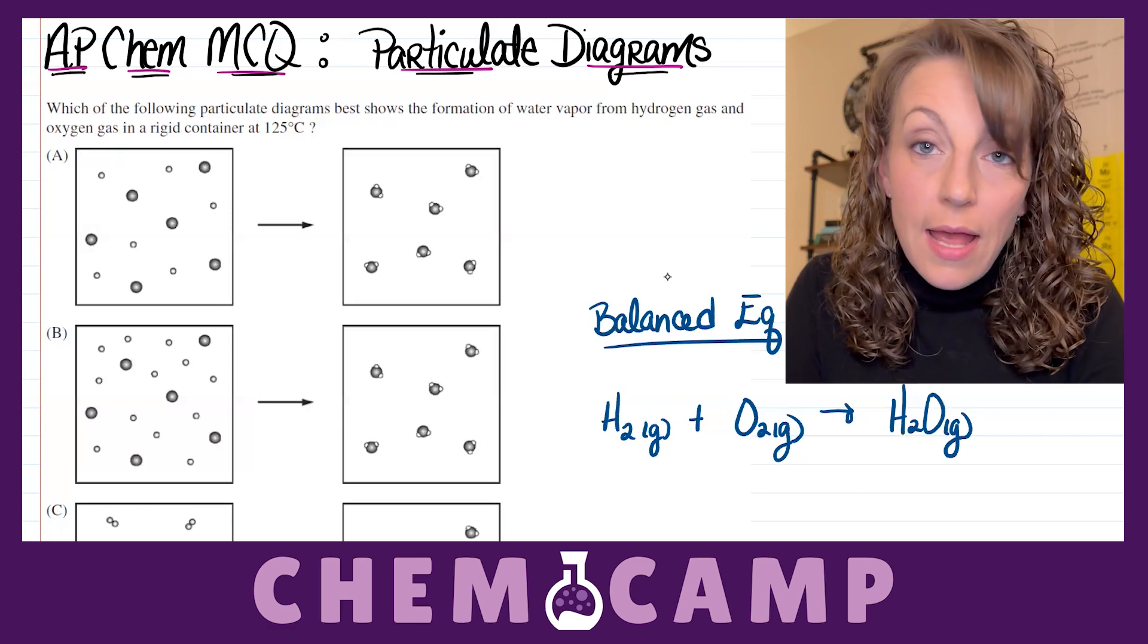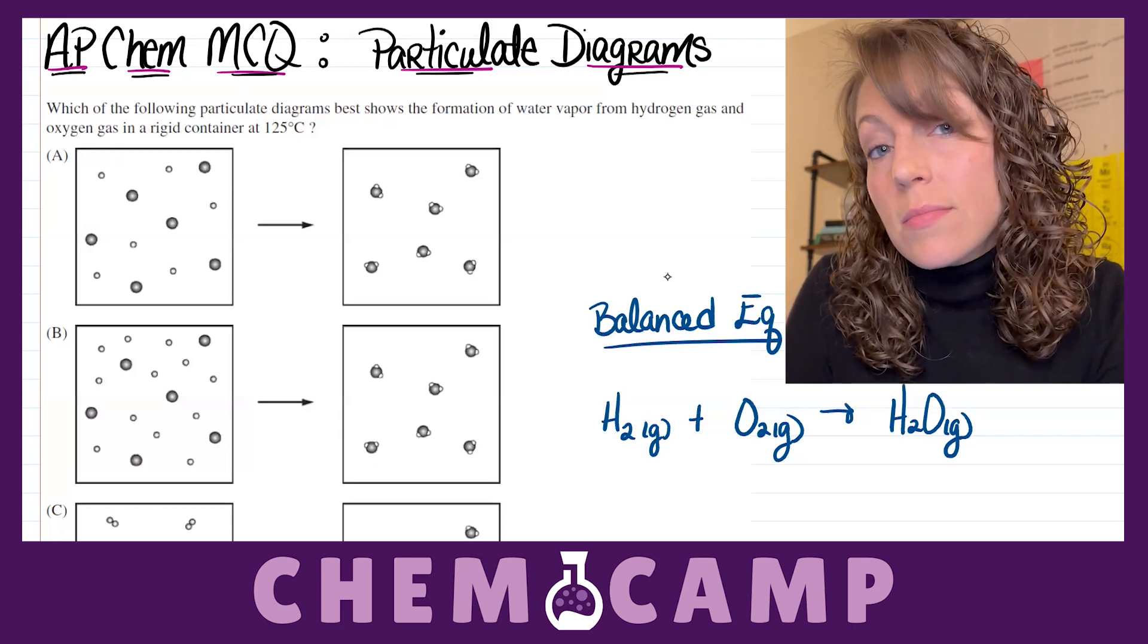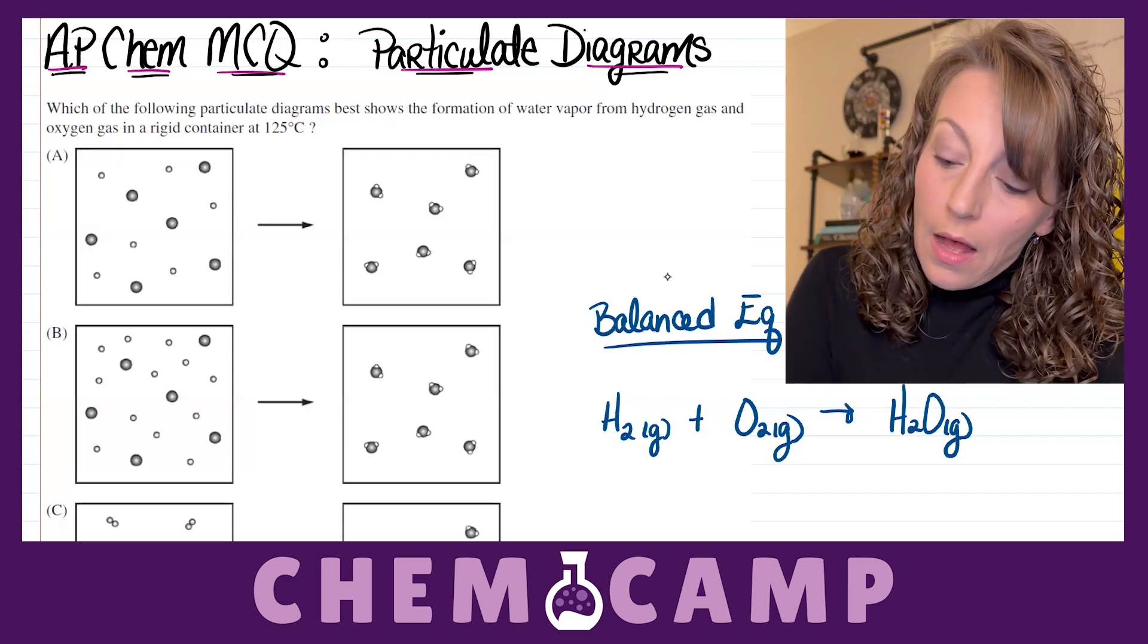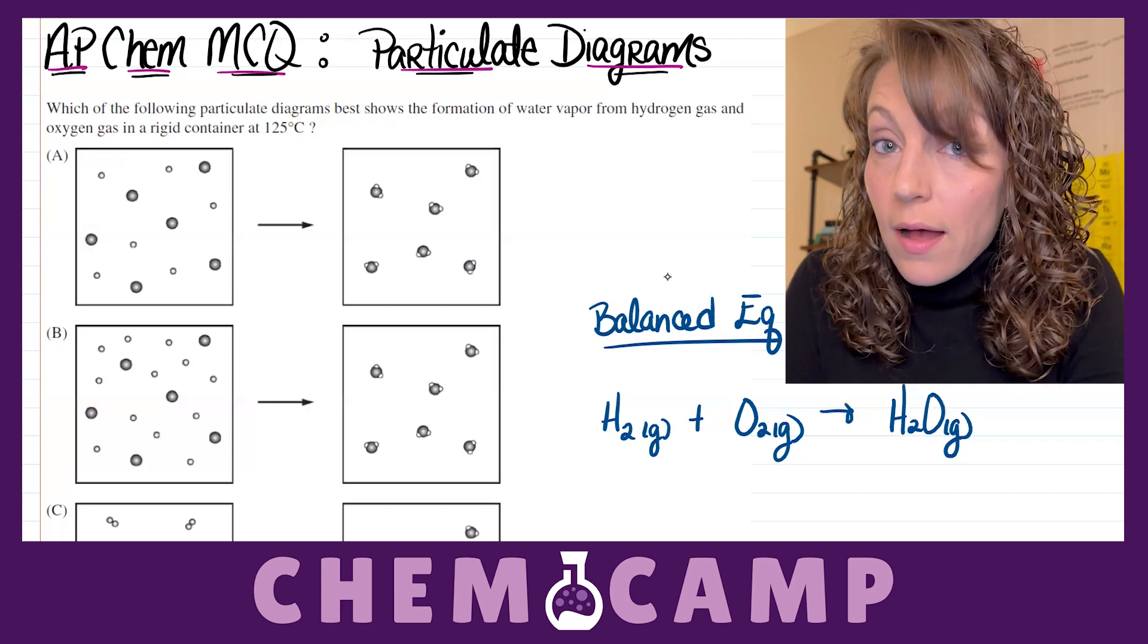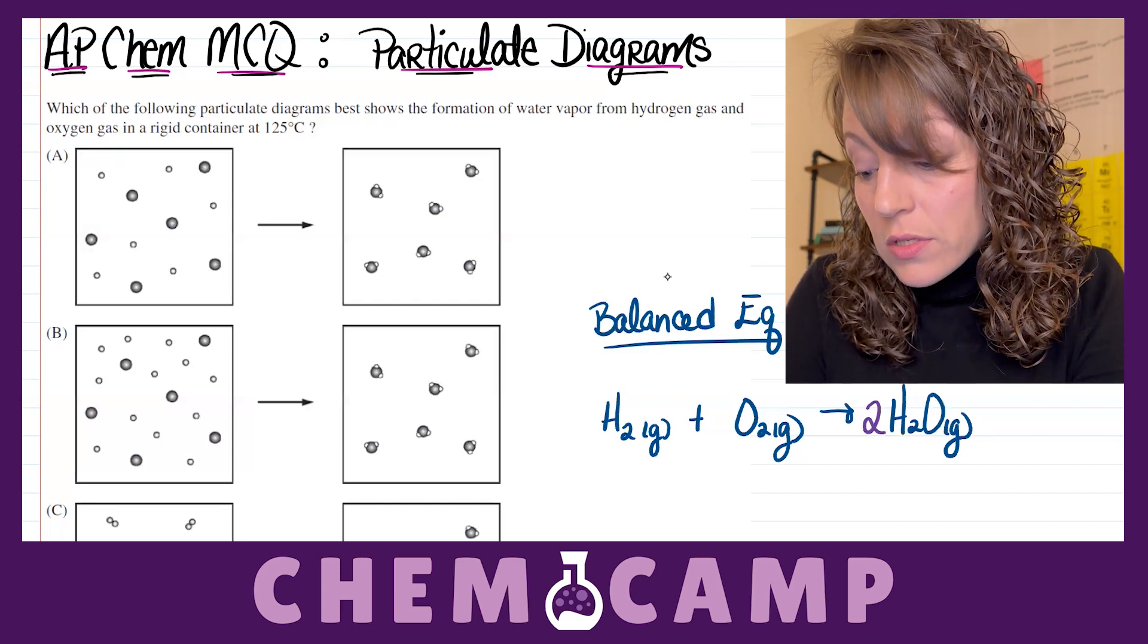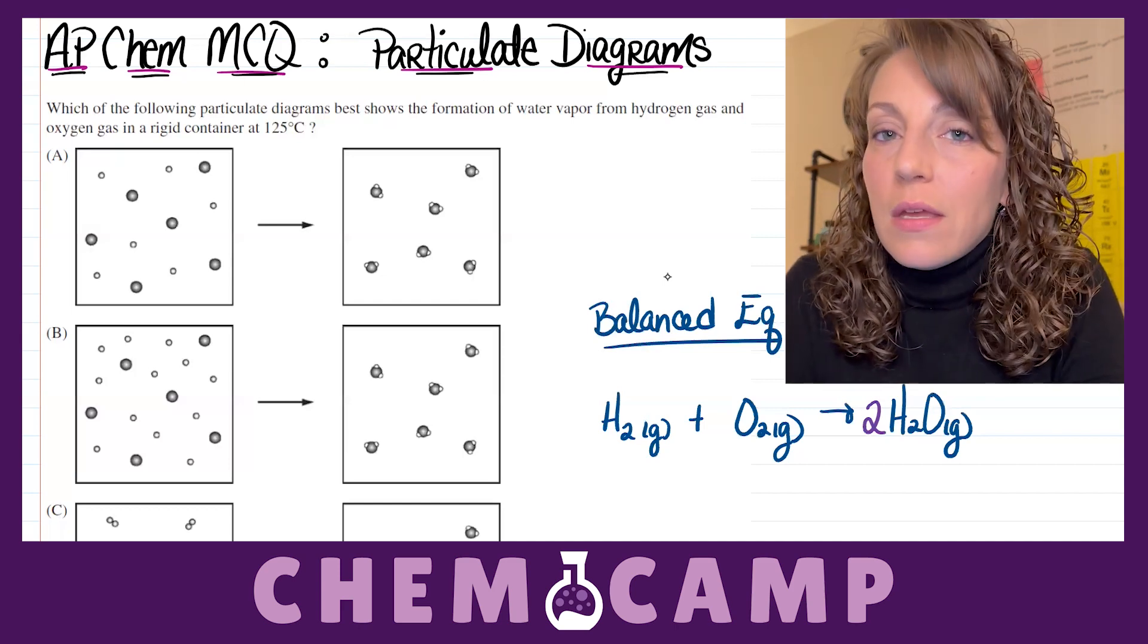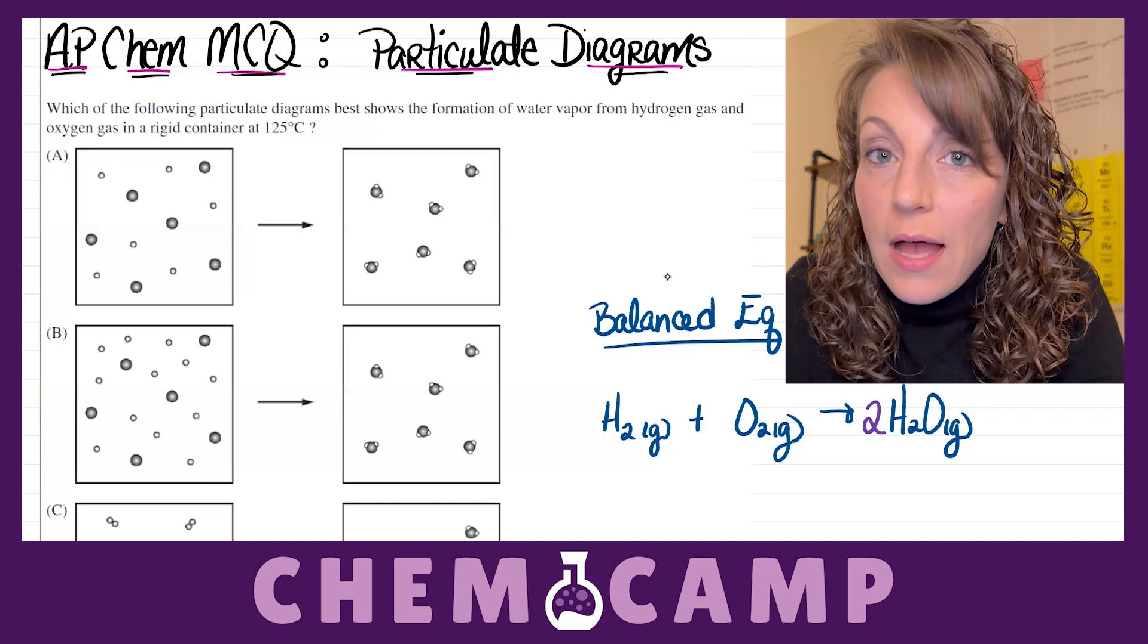The oxygen atoms, however, on the reactant side we have two, but only one oxygen atom on the product side. So I'm going to go ahead and put a coefficient of 2 out in front of the H2O. This goes ahead and balances those oxygen atoms out.